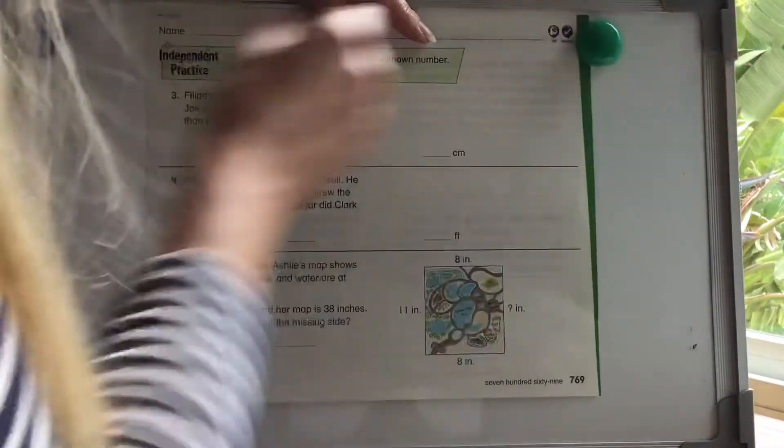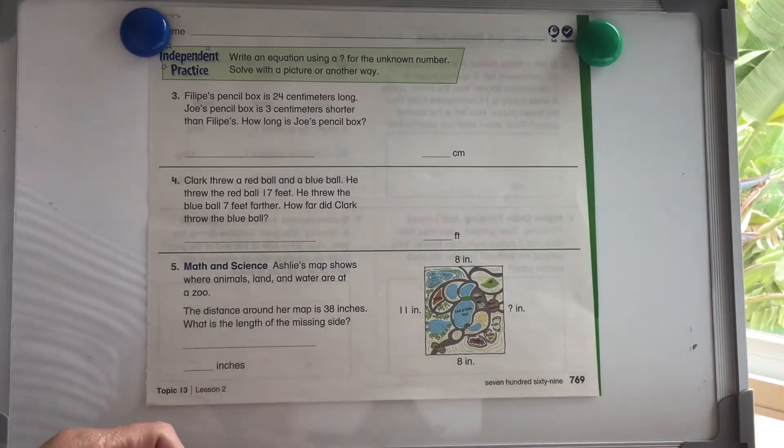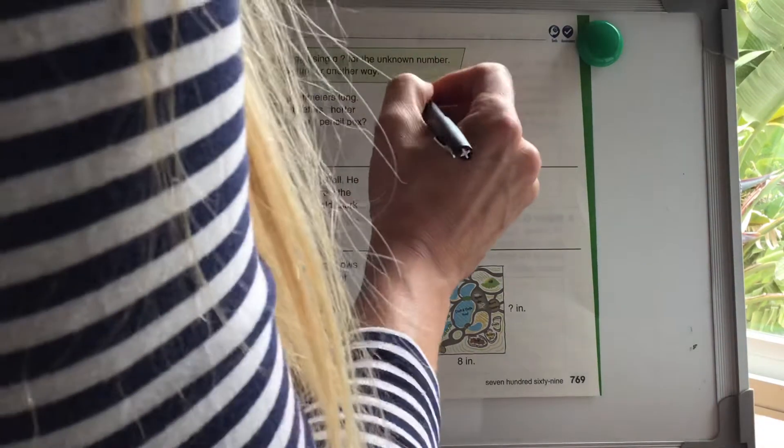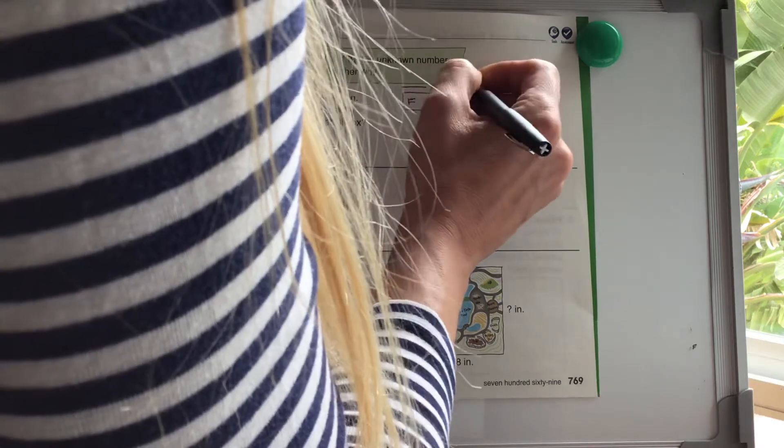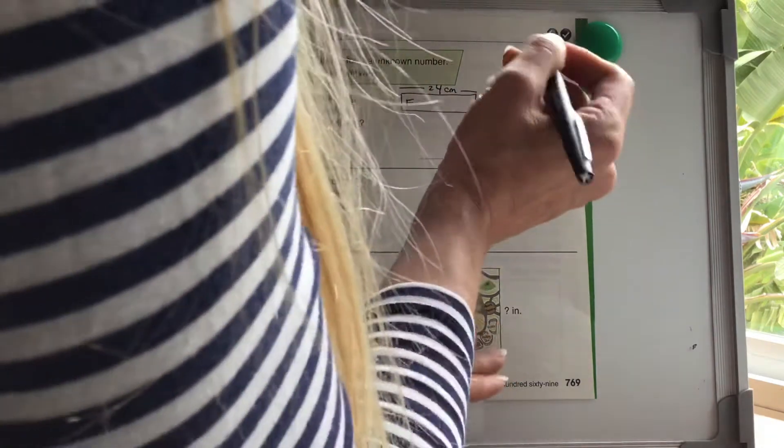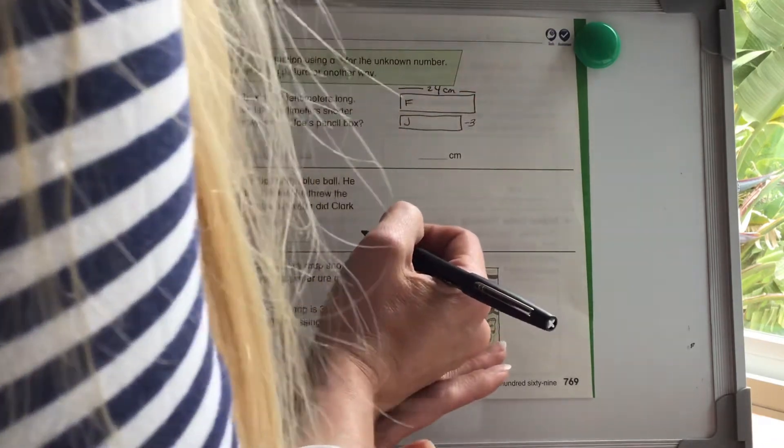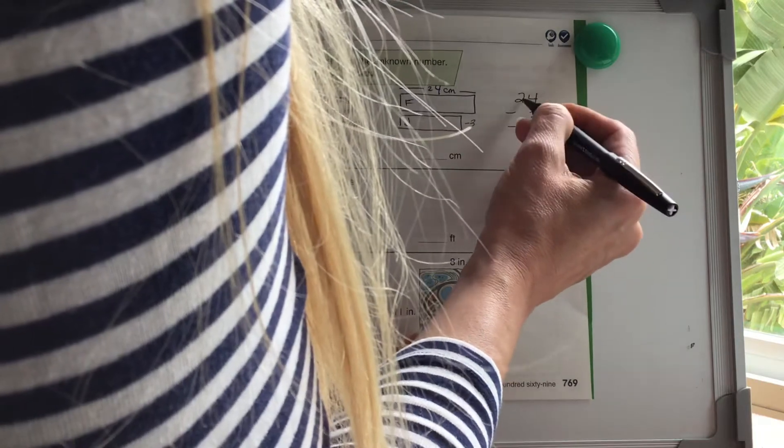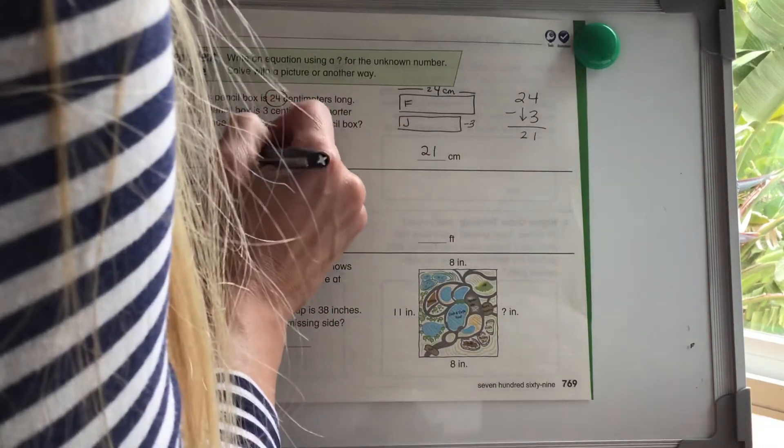Let's head on to our independent practice page here on page 769. Write an equation. Remember an equation is just a math sentence for the unknown number. Then solve with a picture or another way. I like to draw pictures. That helps me, but you're also welcome to do whatever way works best for you. Felipe's pencil box is 24 centimeters long. So I'm going to do that here. Here's Felipe's. I put F for Felipe and this is 24 centimeters long. Joe's pencil box is three centimeters shorter. So I know 24 minus three, four minus three is one, two minus nothing is two is 21 centimeters. So how long is Joe's pencil box? It is 21 centimeters.